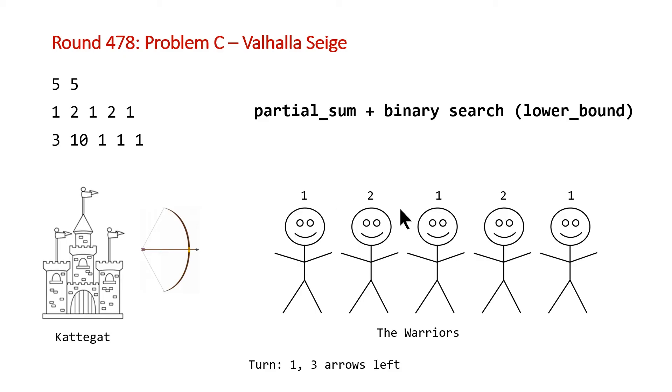Here we have one, two, one, two, one. But if we use partial sum on those numbers, we'll end up with one, three, four, six, seven - the running sum. And so now that we have this running sum, we're able to use a binary search with the arrows so far since the last time we saw Thor.